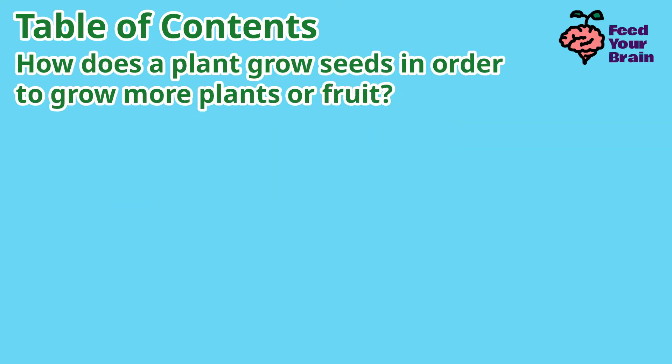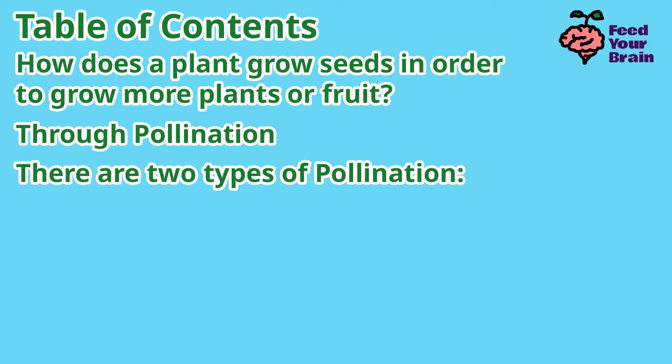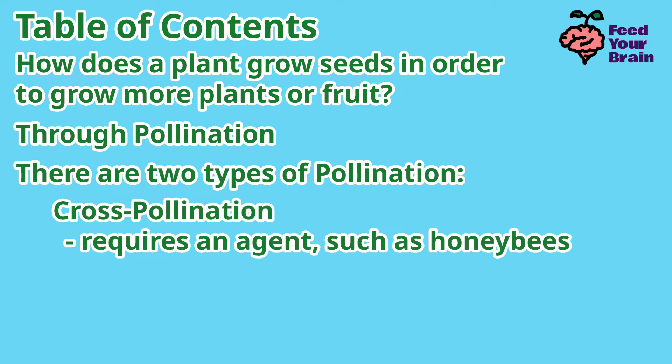First off: how does a plant grow seeds in order to grow more plants or fruit? Through pollination. There are two types of pollination: cross-pollination, which requires an agent such as honeybees, and self-pollination.